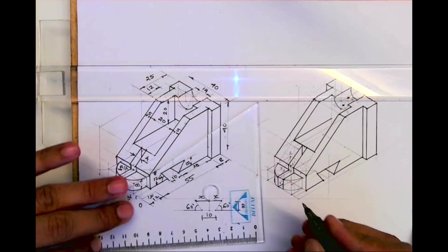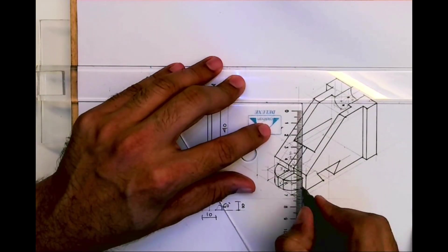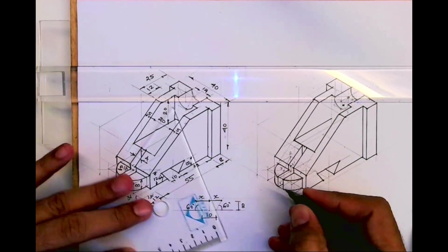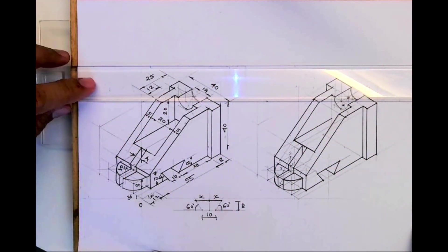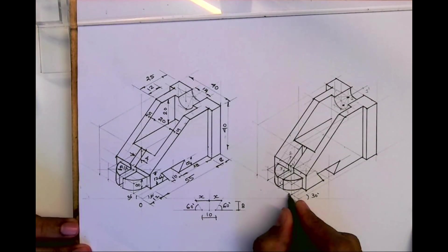So this way we have completed this. I hope you people have understood this. So you can draw the remaining line and mark the origin at 30-30. Thank you.